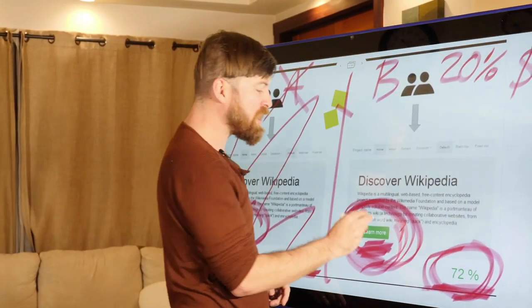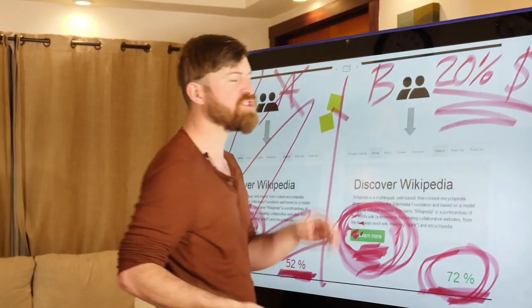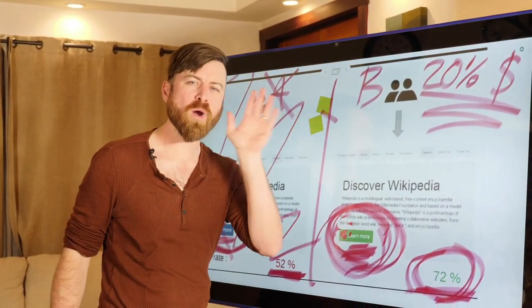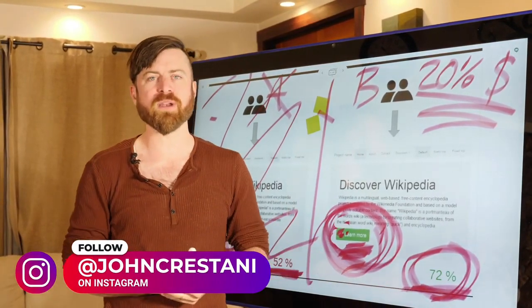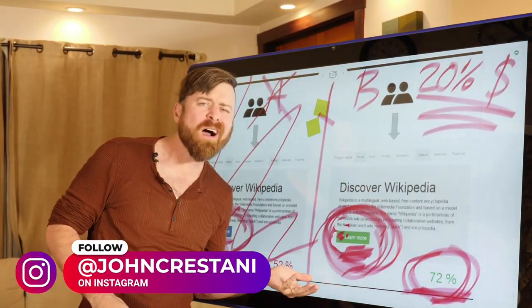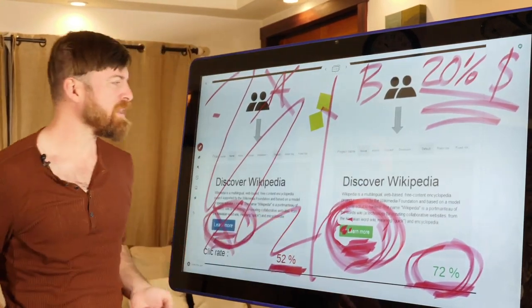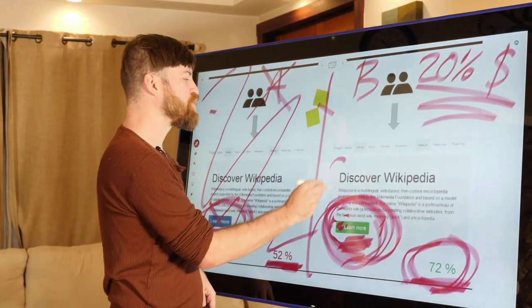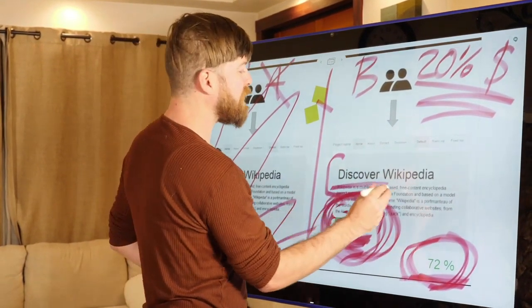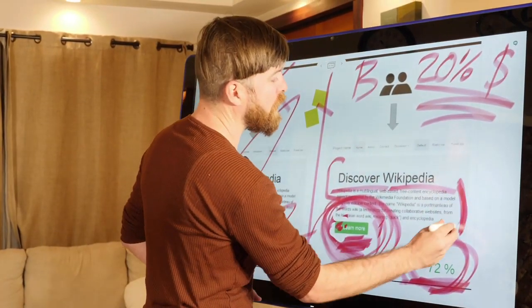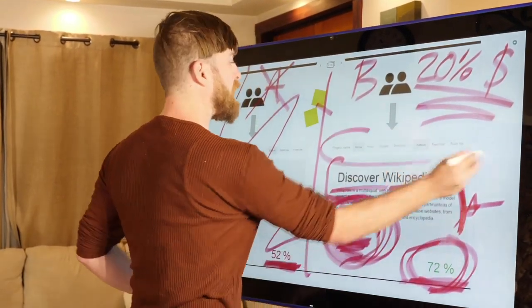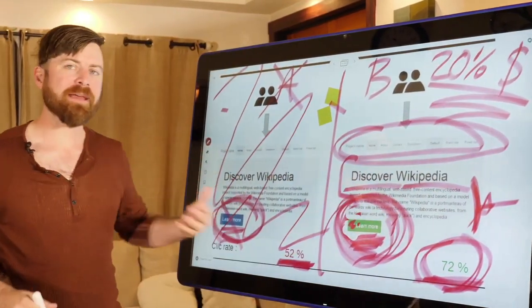Wikipedia just by changing the color of their button received 20% more money. Now if you could receive $100 or if you could receive $120 simply by changing a color on a button, imagine how many more gains you could do by changing the headline. Instead of saying discover Wikipedia, maybe there's a better way of phrasing that. Maybe there's better writing that can go on right here. Maybe there's a better interface up here. You stack these gains.